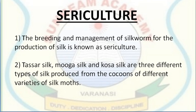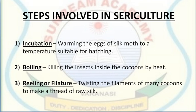In sericulture practice, a female silk moth lays hundreds of eggs at a time. These eggs are warmed to a suitable temperature for hatching — this is known as incubation, the first step in sericulture. The eggs are collected and warmed to provide the suitable temperature necessary for hatching.